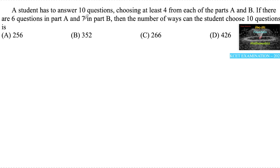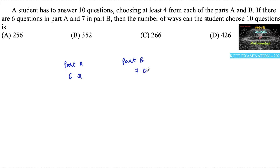A student has to answer 10 questions, choosing at least 4 from each of the parts A and B. There are 6 questions in part A and 7 in part B. The total questions to attempt is 10, and at least 4 must come from each of the parts.